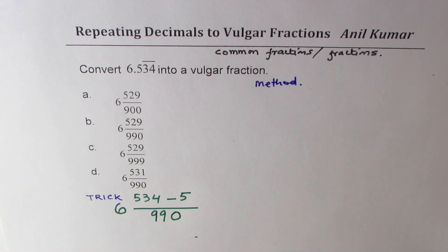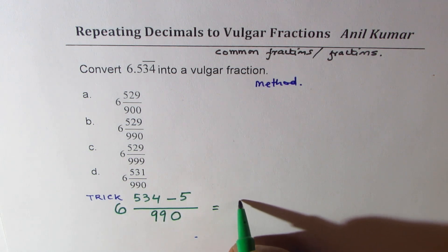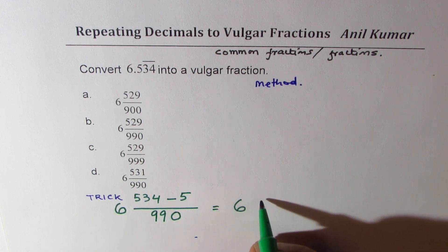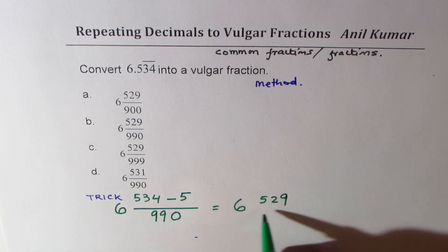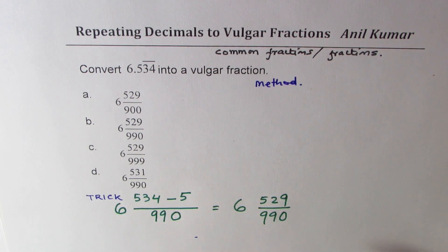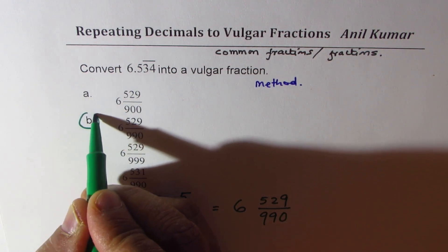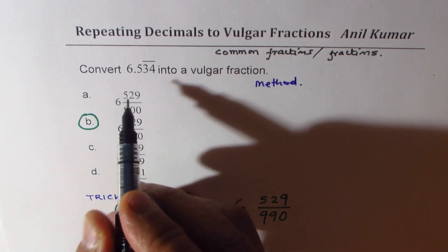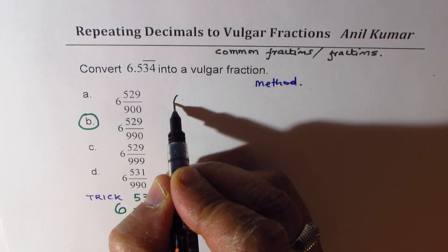So if you look into this, 534 minus 5 is 529 over 990, so that is the answer which is option B for us. This is a very shortcut method which gives you the answer immediately. Now let's look into the method.